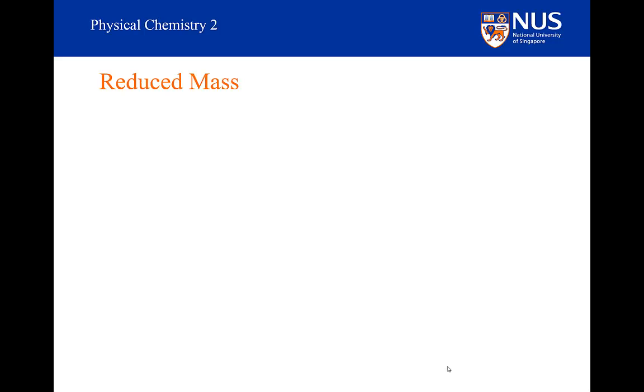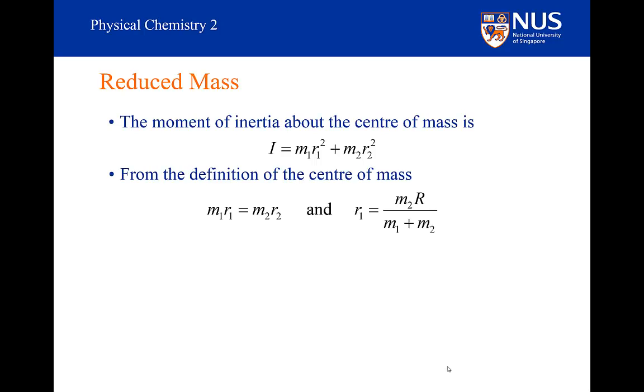With a simple mathematical manipulation, we are going to introduce the concept of reduced mass. The moment of inertia about the centre of mass is with regards to a particular rotational axis. Remember that the rotational axis is always through the centre of mass. We already knew the expression of a moment of inertia, but now we also know that m1 r1 is equal to m2 r2. Noting that the bond length capital R is equal to r1 plus r2, and with a little bit of manipulation, I can write r1 purely in terms of the bond length. There is a similar expression for r2.